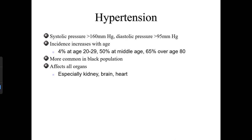Those plaques cause blood to spurt through the cardiovascular system at a higher rate, which is how we measure blood pressure. A good blood pressure is 120 over 80; bad blood pressure is anything over that; hypertension is greater than 160 systolic or greater than 95 diastolic.